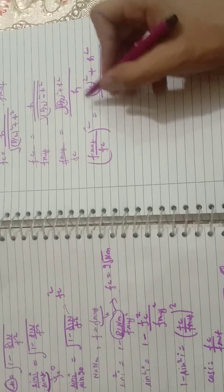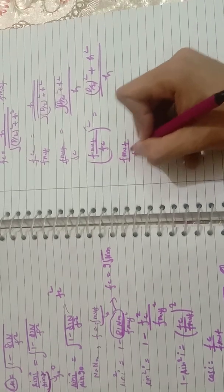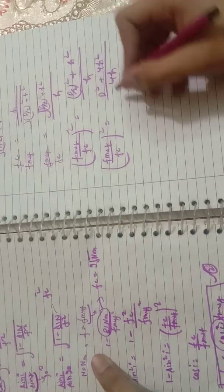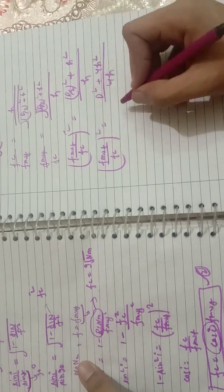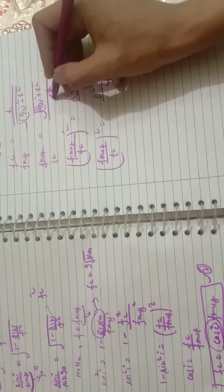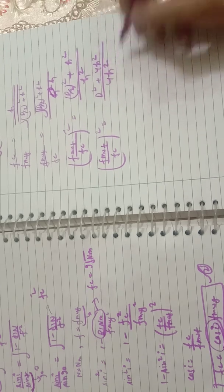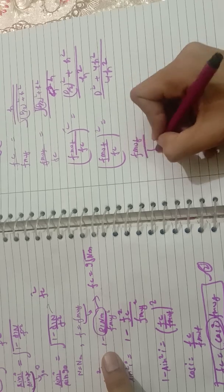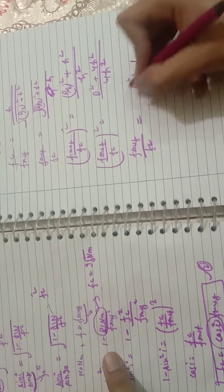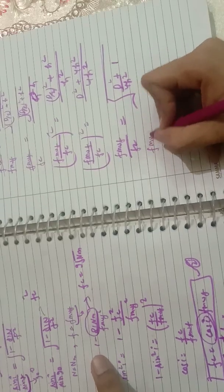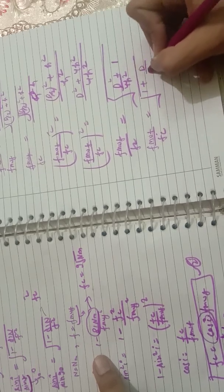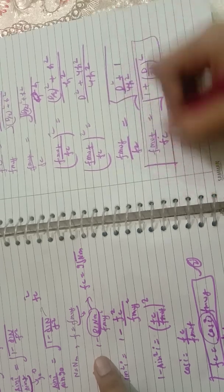Continuing the algebra: (f_MUF/f_c)² = (d² + 4h²) / (4h²). Taking the square root of both sides and rearranging, we get f_MUF/f_c = √(1 + (d/2h)²), which can be written as f_MUF = f_c × √(1 + (d/2h)²). This is the basic relation between f_MUF and skip distance d.